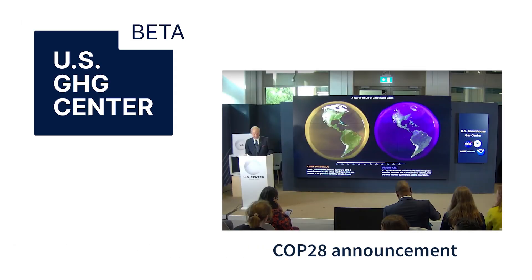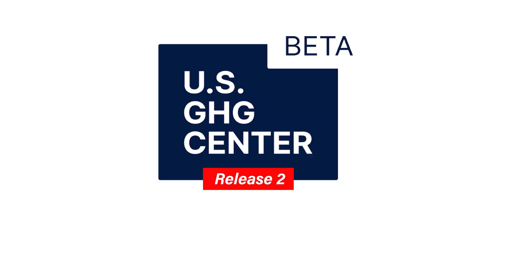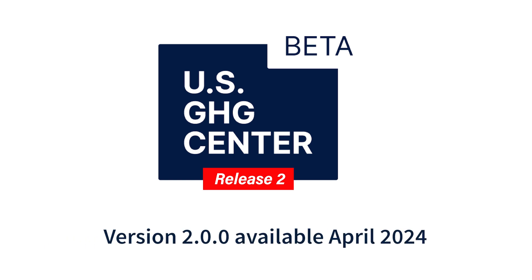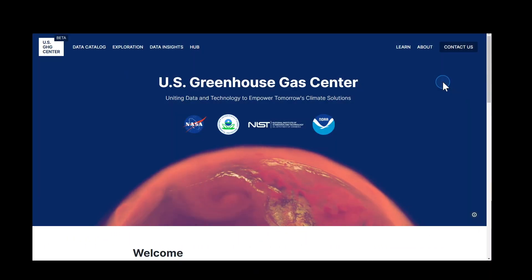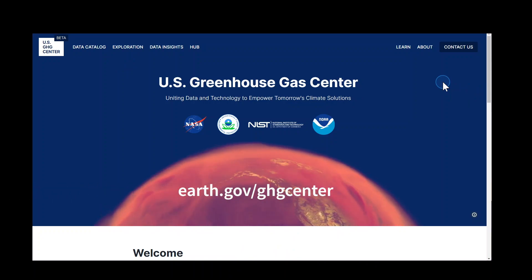The first beta version was launched in December 2023 at the United Nations Climate Change Conference, COP28. Since then, the portal has undergone additional improvements and was re-released in April 2024. The U.S. GHG Center homepage is found at earth.gov/ghgcenter.